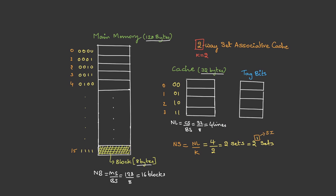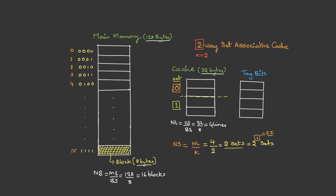What does that mean? The number of sets is 2, so we partition the cache: this will be set 0 and this will be set 1. We just need 1 bit to identify the first set and 1 bit to identify the second set — that's what set index means. Set 0 can hold all the blocks whose block index least significant bit is 0, so it can hold block 0, block 2, block 4, and so on.